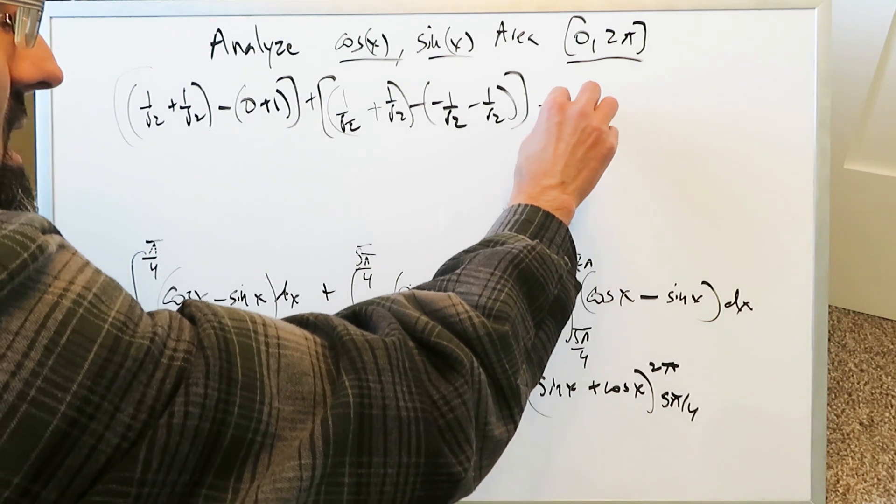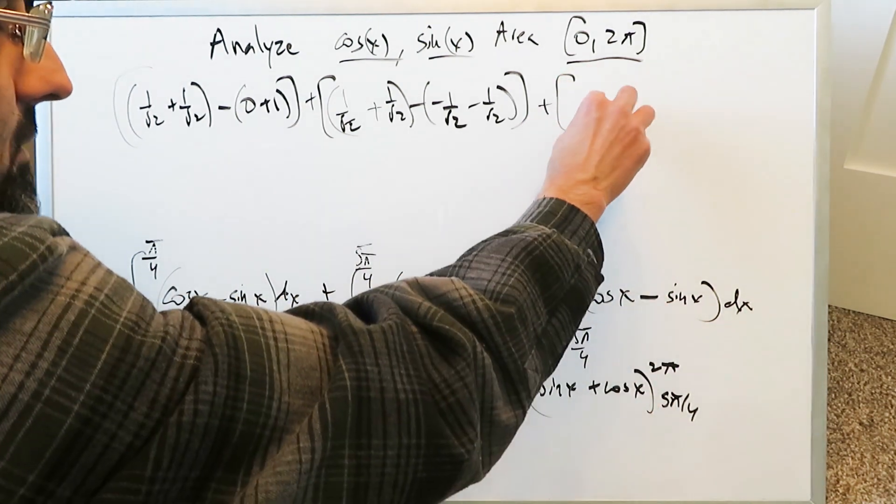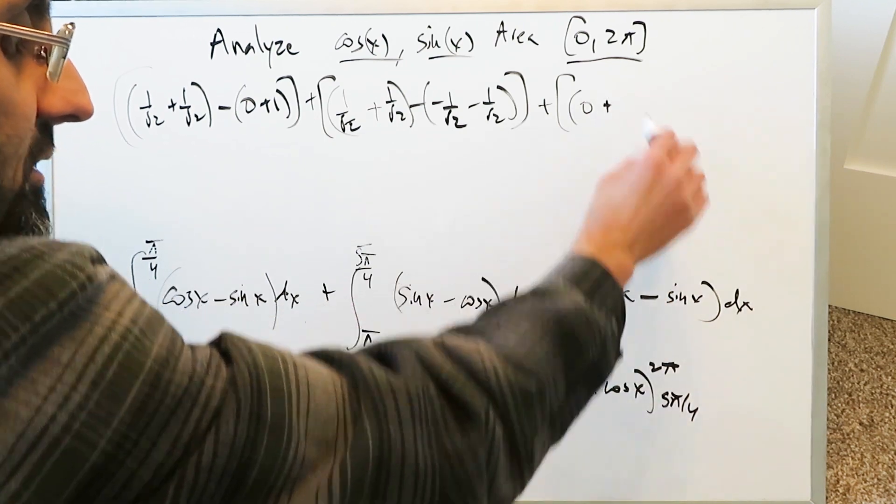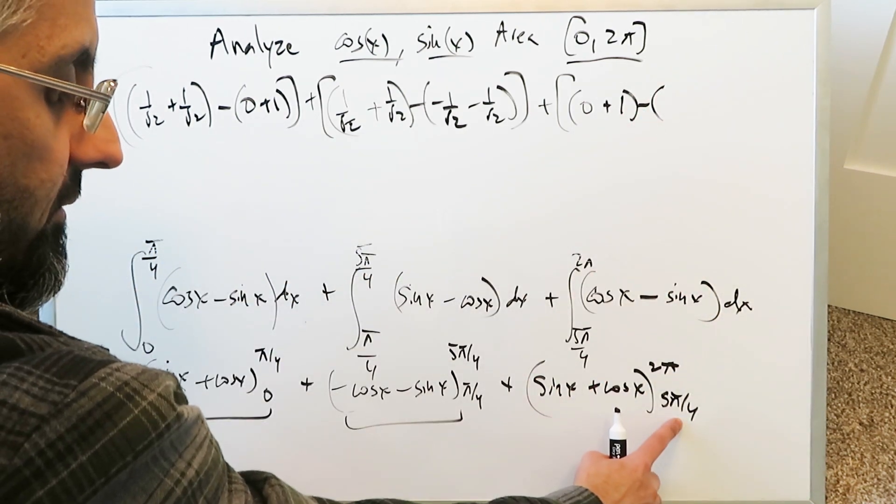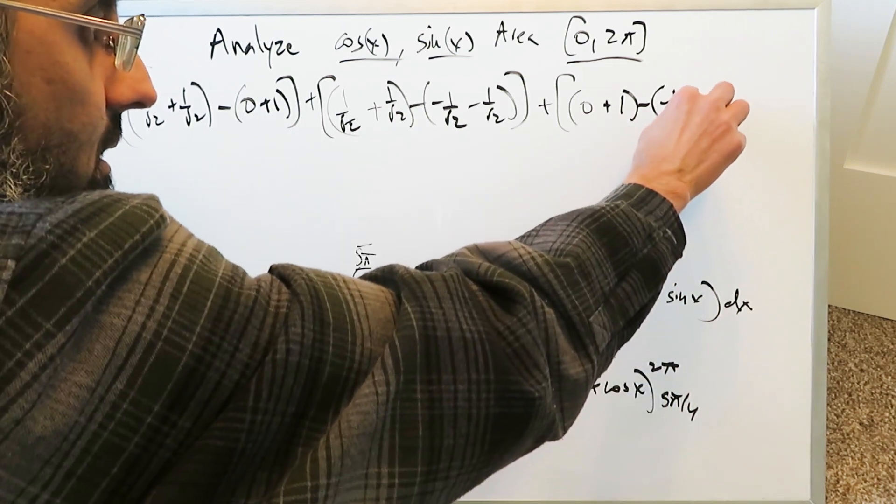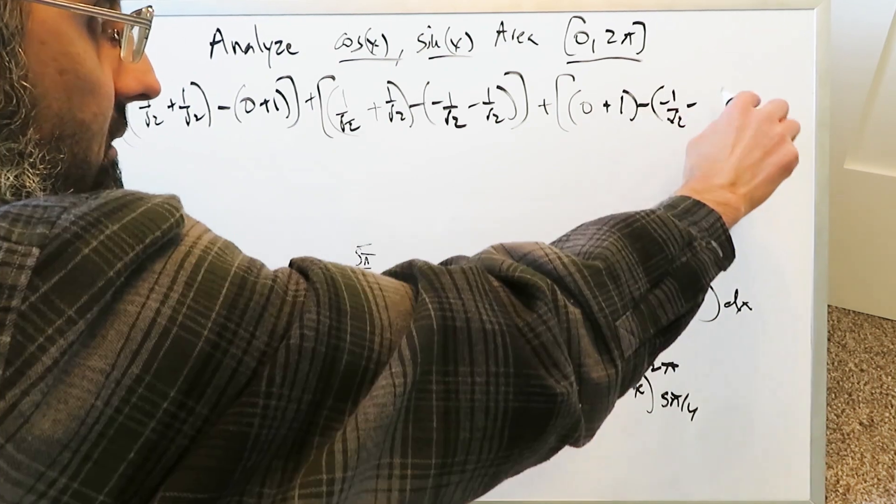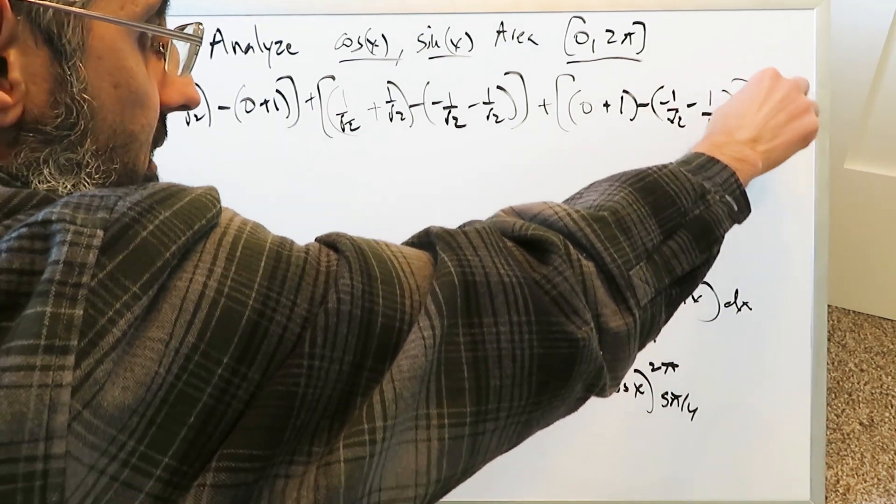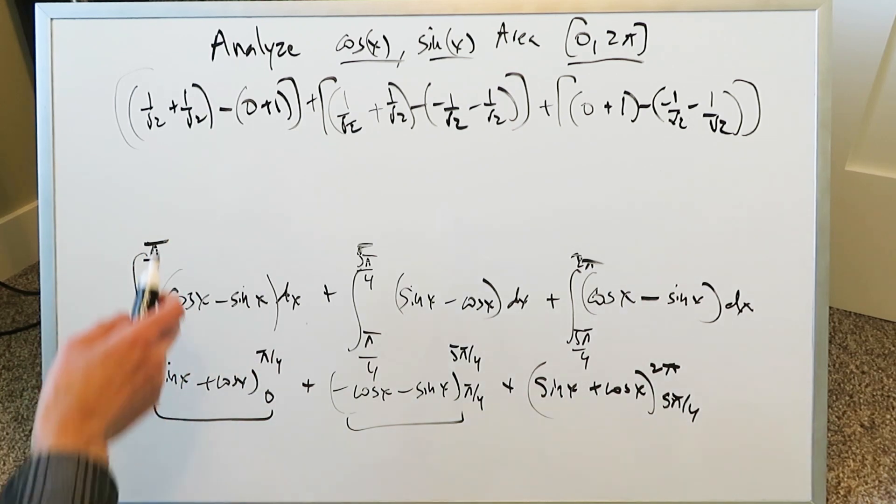Lastly, -sin(2π) = 0, +cos(2π) = 1, -sin(5π/4) = -(-1/√2), +cos(5π/4) = -1/√2. We have everything now in the framework to take this to completion.